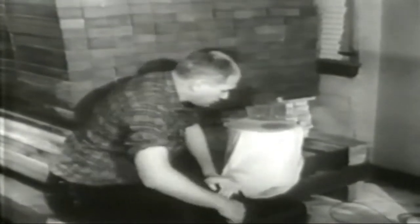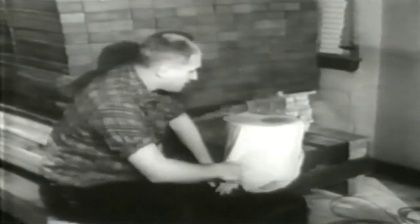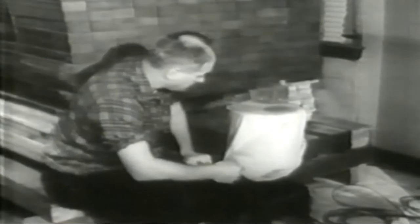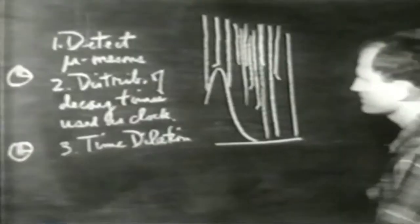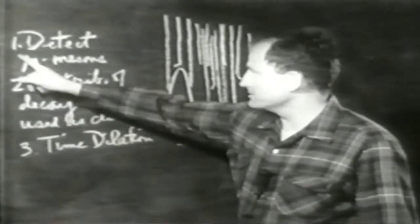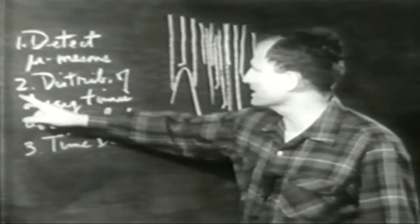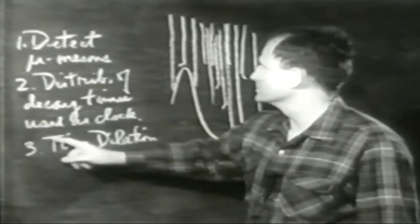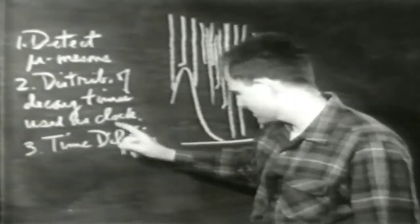Quasi tutti i mesoni vanno oltre lo scintillatore. Possiamo fermarne alcuni nello scintillatore tuttavia col rallentarli in questi 80 centimetri di ferro — che pesa più di 5 tonnellate. Noi vogliamo fermare alcuni mesoni nello scintillatore al fine di osservare il loro decadimento radioattivo. Questo ci porta al secondo punto: sappiamo già come rivelare i mesoni mu, ora vogliamo misurare quanto tempo impiegano per decadere, allo scopo di usarli come orologi.